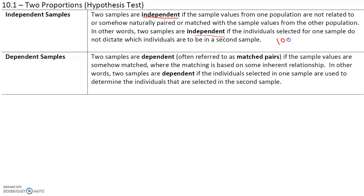We will talk much more about this in section 10.3. Two samples are dependent, often referred to as matched pairs, if the sample values are somehow matched or related. In other words, two samples are dependent if the individuals selected in one sample are used to determine the individuals selected in the second sample.